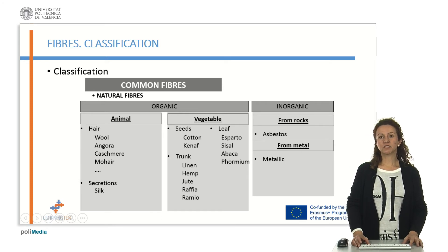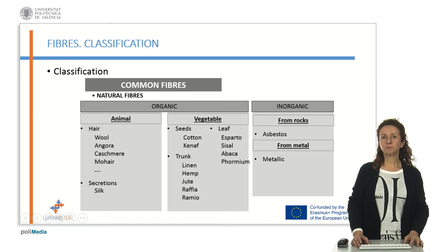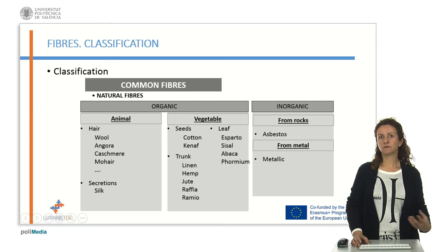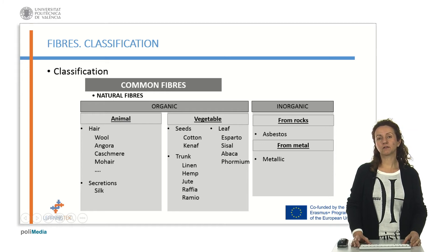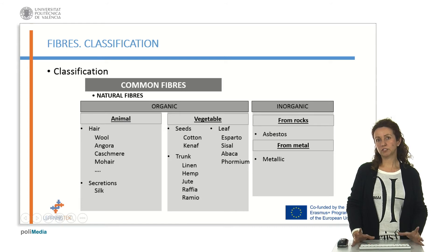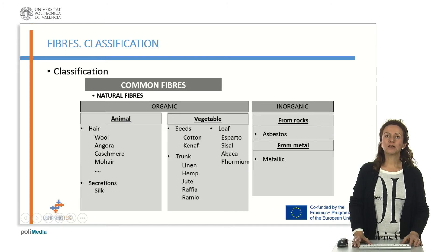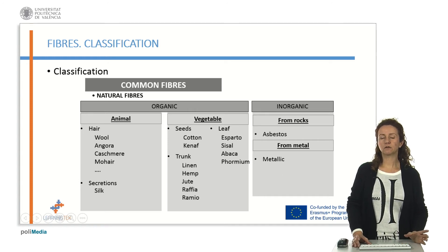If we move to vegetable fibres, we can find that they come from different parts of the plant. For example, the seeds, the leaf, the trunk. From the seeds the most common one is cotton, but we can find others like kenaf, retama, coco, etc. If they come from the leaf we can find esparto, sisal, lavaca, formium and others.